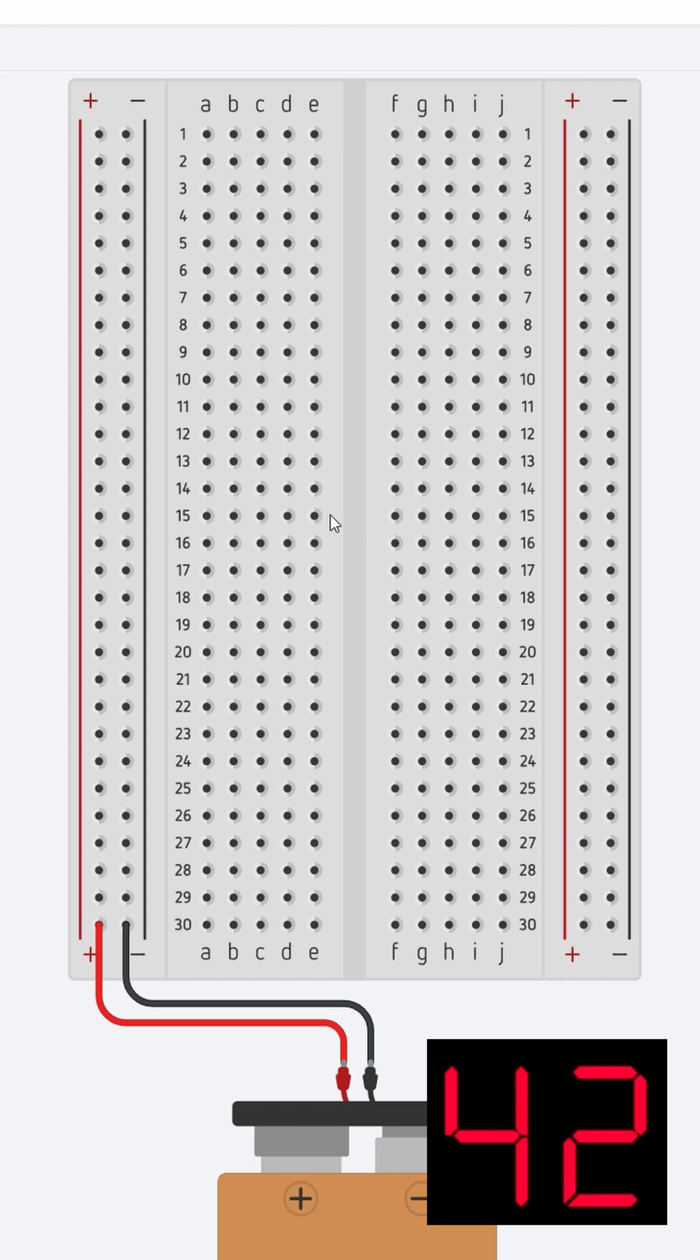Okay, here I have a breadboard that's connected with a battery. Now the battery is connected to the power rail and the negative rail, and each breadboard has two rails.